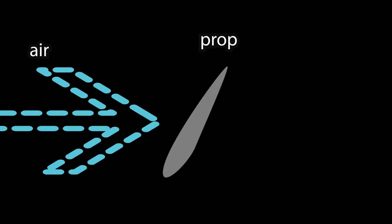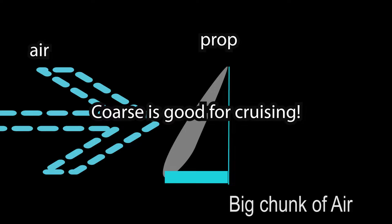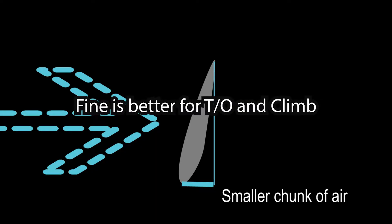Coarse pitch means the propeller takes a greater chunk of air — a high angle of attack — which leads to a decrease in RPM because it's taking a larger chunk of air. Since it takes more air, this is better for cruising and cross country. Fine pitch has a higher RPM because it takes a smaller chunk of air, making it better for takeoff and climb. These are the two main pitches we'll talk about with variable speed propellers.